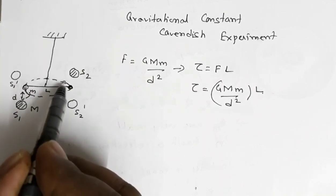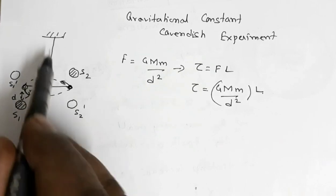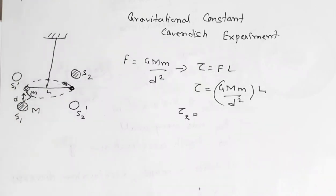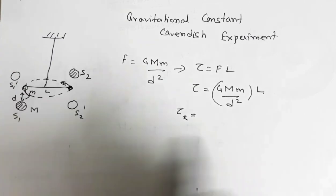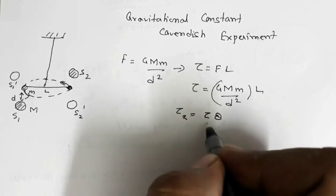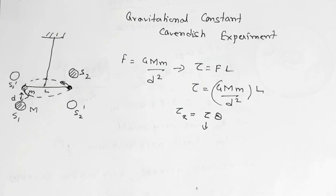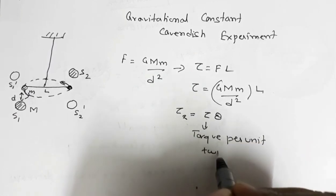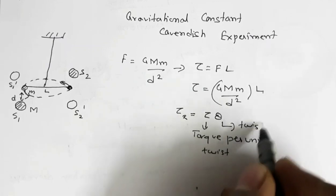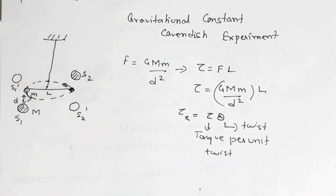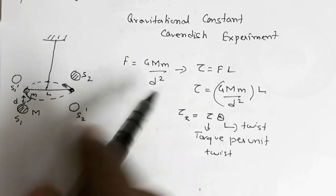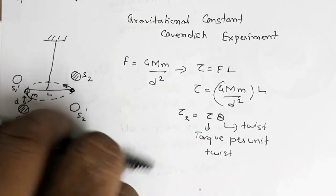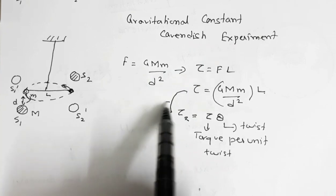As the rod rotates there is a twist in the wire. The restoring torque produced in the wire is τ_r = τ·θ, where τ is the torque per unit twist (couple per unit twist) and θ is the angle through which the rod rotates. This applied torque tries to rotate the system, while the restoring torque tries to bring the system back to its original position.